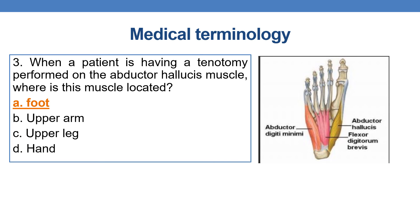Coming to the next question: when a patient is having a tenotomy performed on the abductor hallucis muscle, where is this muscle located? The abductor hallucis muscle is present in the foot region. You can see the diagrammatic representation — this is the abductor digiti minimi, this is the abductor hallucis, and this is the flexor digitorum brevis.